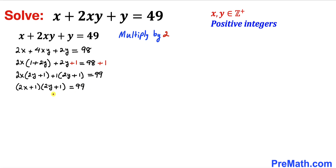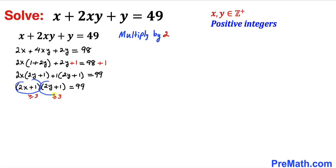Since x and y are positive integers, 2x plus 1 is going to be greater than or equal to 3, and likewise 2y plus 1 is going to be greater than or equal to 3. So we need to express 99 as a product of two factors, both on the left hand side.